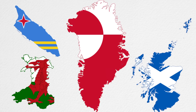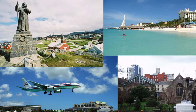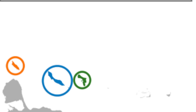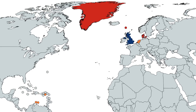Greenland, Scotland, Wales, Aruba, St. Martin — what do all these lands have in common? Well, not much, except for one thing: they're all countries, except not really. They're some of the world's few constituent countries.